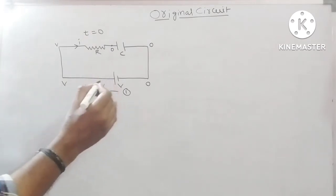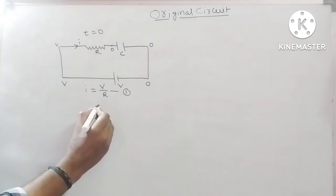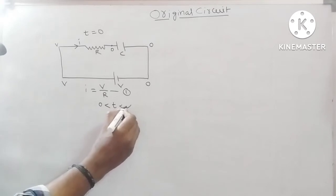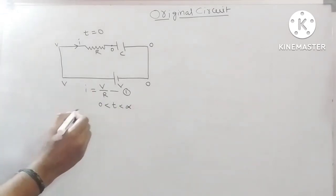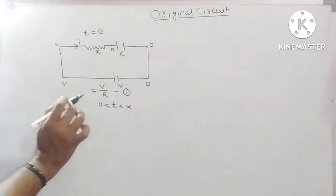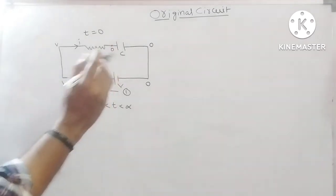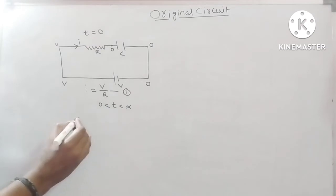After some time, that means 0 is less than T, T is greater than 0, less than infinity. In this condition, that means after some time, current passes in circuit.